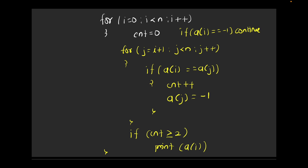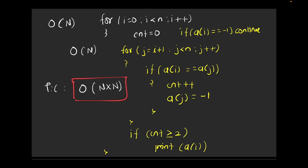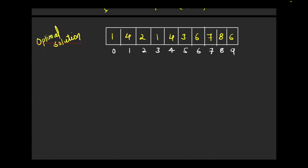The total time complexity for the brute force is O(n²) — the outer loop runs n times and in the worst case the inner loop also runs n times. This will give a time limit exceeded, so let's look at the optimal solution.